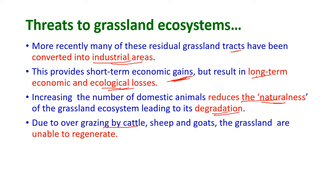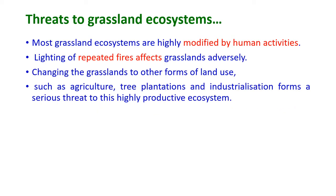Due to overgrazing by cattle, sheep and goats, grasslands are unable to regenerate. Most grassland ecosystems are highly modified by human activities. Lighting of repeated fires affects grasslands adversely, and changing grasslands into other forms of land use — such as agriculture, tree plantations and industrialization — forms a serious threat to this highly productive ecosystem.